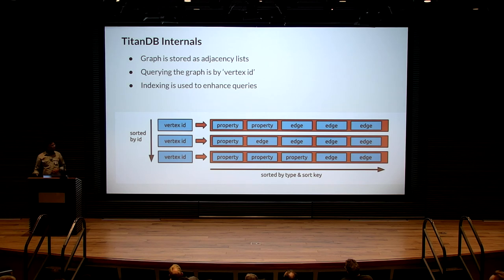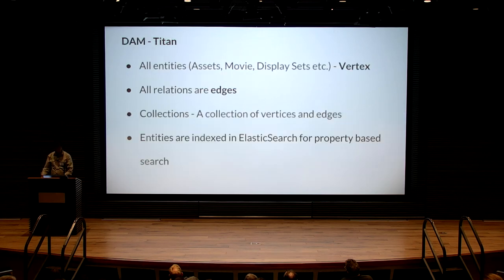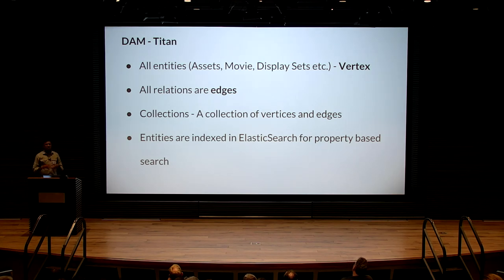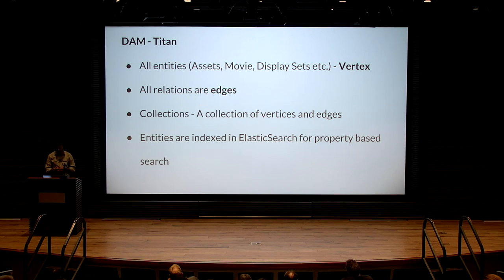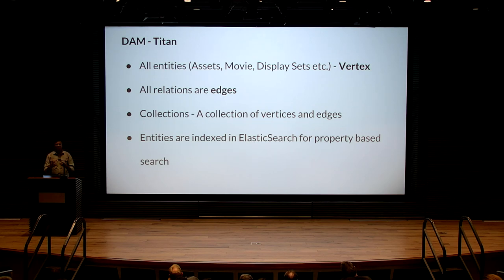When we start off mapping DAM with Titan: all the entities can be assumed as vertices and all the relations are edges. We also have a concept of a collection — a subgraph that is also an entity for us, perceived as an asset in our system. Entities are indexed in Elasticsearch for property-based search — you can query by certain properties of a type or value and get those entities back.